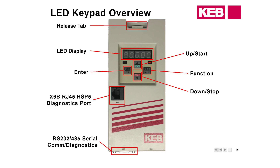The keypad screen itself has an LED display — that's where your parameter name and parameter number are going to show up. We have Enter, Start, Stop, and Function buttons for viewing and changing parameters, and then the release tab at the top. The release tab must always snap up in order for the keypad to be properly seated; if it's not properly seated, we could have intermittent communication errors.